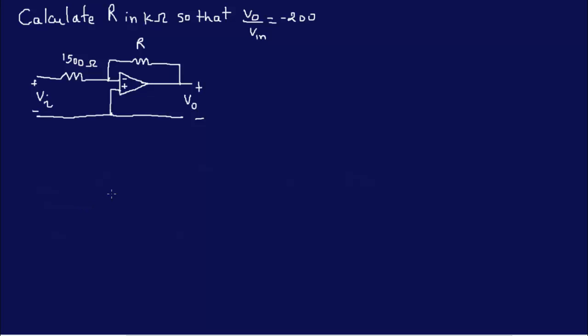Okay, so calculate R in kilo-ohms so that V0 over Vn is equal to minus 200. Basically that's the gain and so we are asked to find R. We can go ahead and review our conditions.